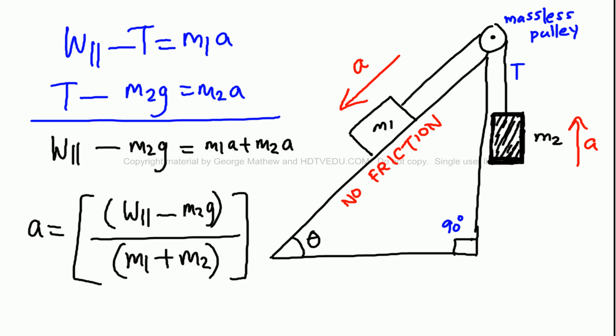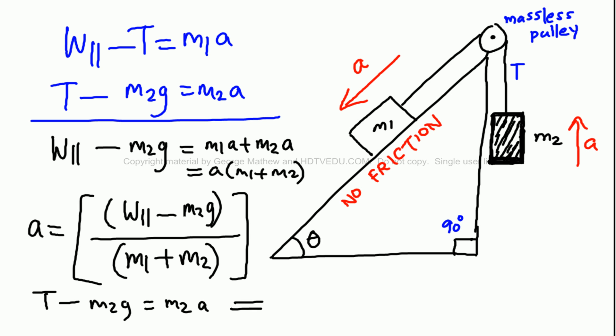Since A is common, the right side becomes A times (M1 plus M2). So A equals W parallel minus M2g divided by (M1 plus M2). Once you have the acceleration, substitute back into T minus M2g equals M2A, giving T equals M2g plus M2A.